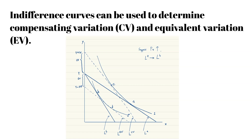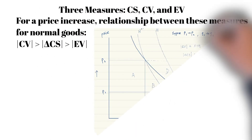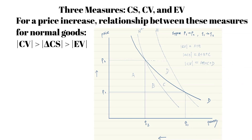To find the equivalent variation, we focus on the new indifference curve. There are three measures of the consumer's welfare change: the consumer surplus change, the compensating variation, and the equivalent variation.